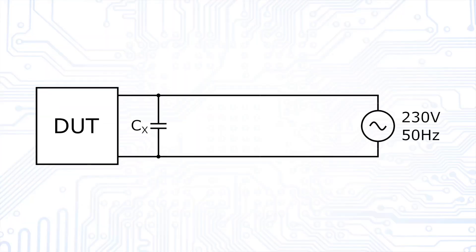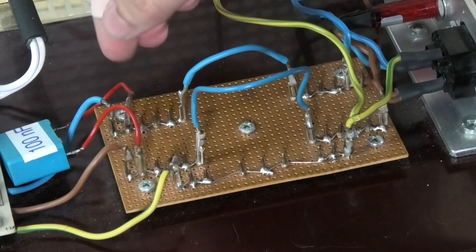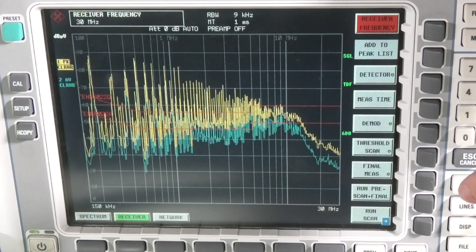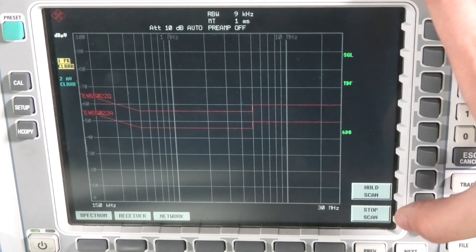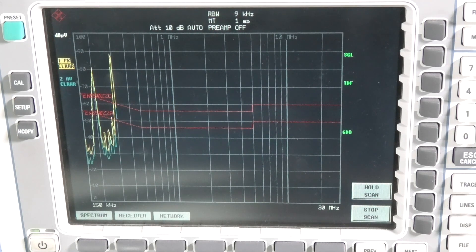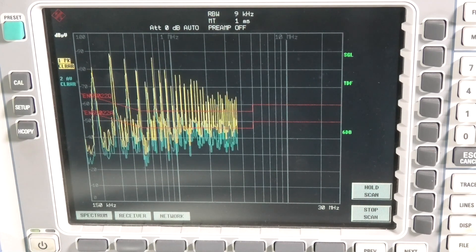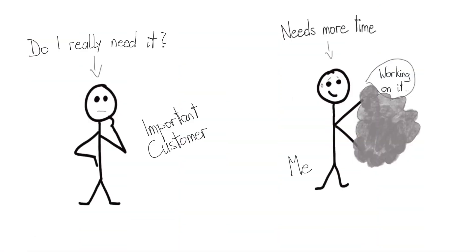So, let's try to add an x-capacitor to suppress differential mode noise. Maybe we will be lucky and thus have solved our emission problem. Obviously, the filter didn't help us much. So, have we failed and will we lose our customer?